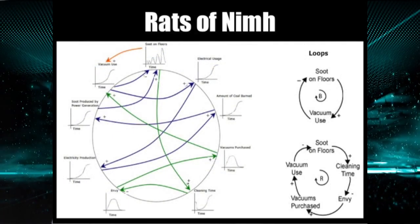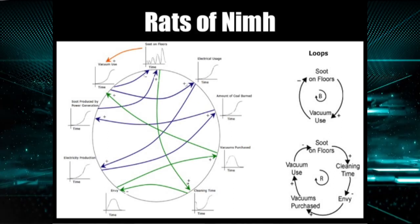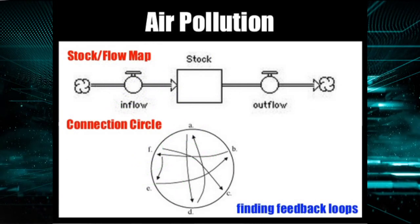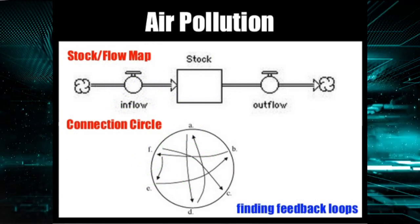What we see here is a connection circle. It is an alternative way of identifying feedback loops. We have two ways of doing so: stock flow maps and connection circles.